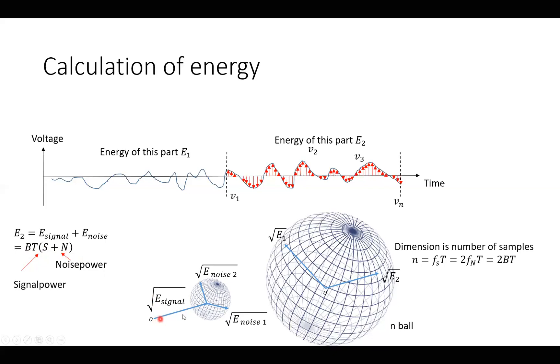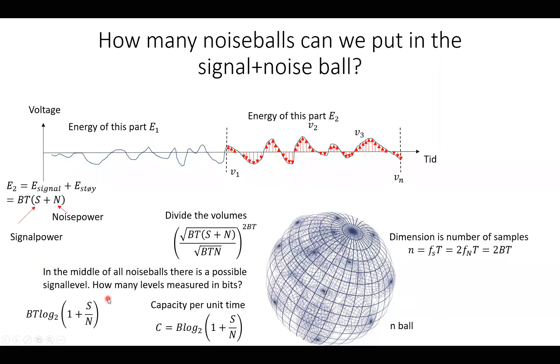And here we see, for instance, an n-signal here, going from here to somewhere like there. And then we have a noise ball here, which is also an n-ball, that is with a signal here in the middle, or the square root of the energy of the signal. So this is the voltage of the signal in the middle here.